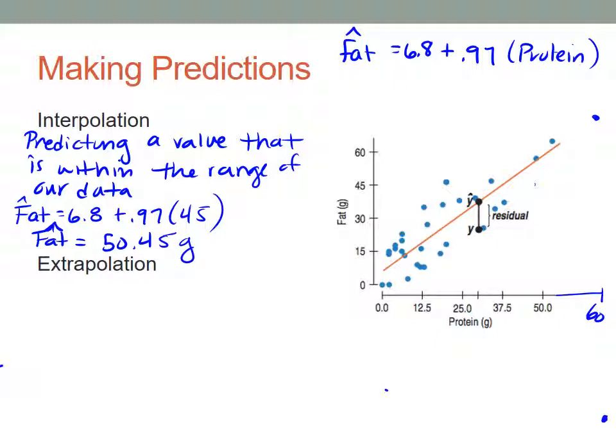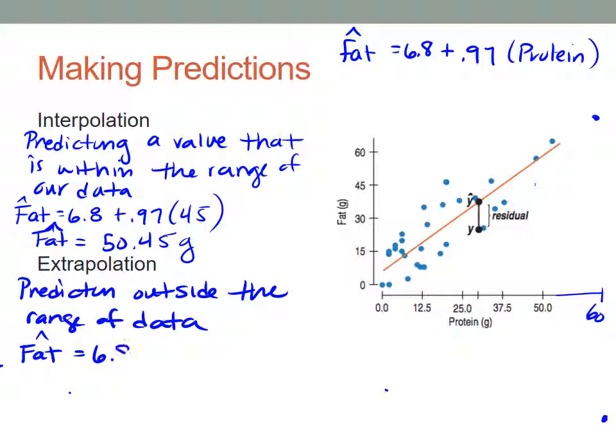If I want to make a prediction outside of our range of data, then I'm going to do the same set of steps. I'm going to take fat hat equation and I'm just going to plug in the value that I want: 6.8 plus 0.97 times 60.